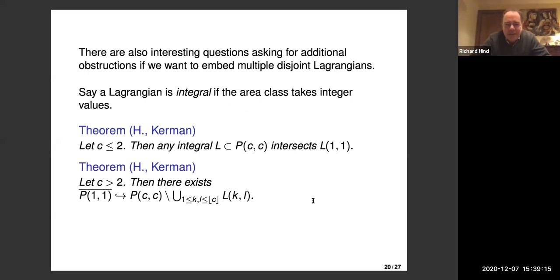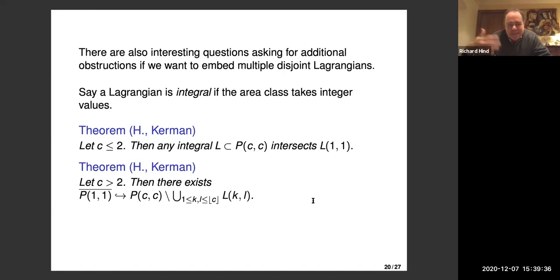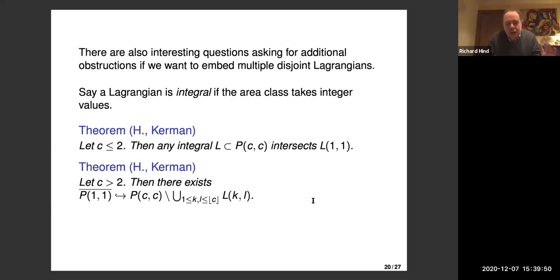There's a trickier question. The motivation: when you talk about ball embeddings you get obstructions from Gromov, and then the next question is to start asking about ball packings. Since a Lagrangian is not occupying any volume, if you can embed one Lagrangian with a certain area class, there's no immediate obstruction to embedding infinitely many in the same domain with the same area class. We want to try and understand that.